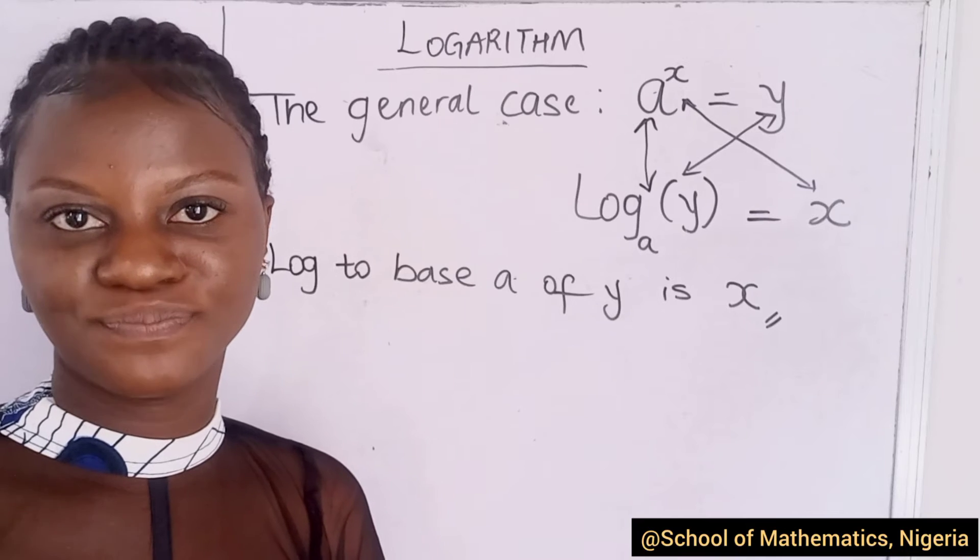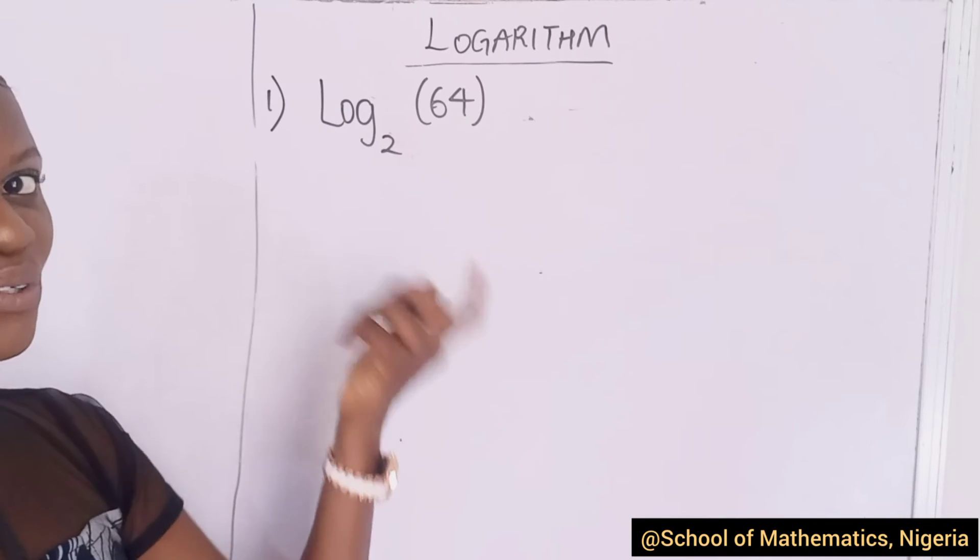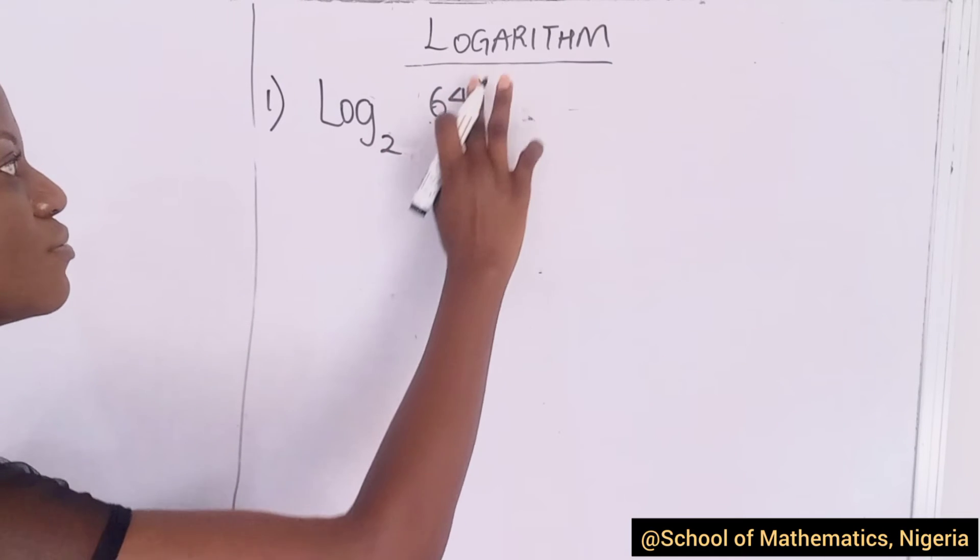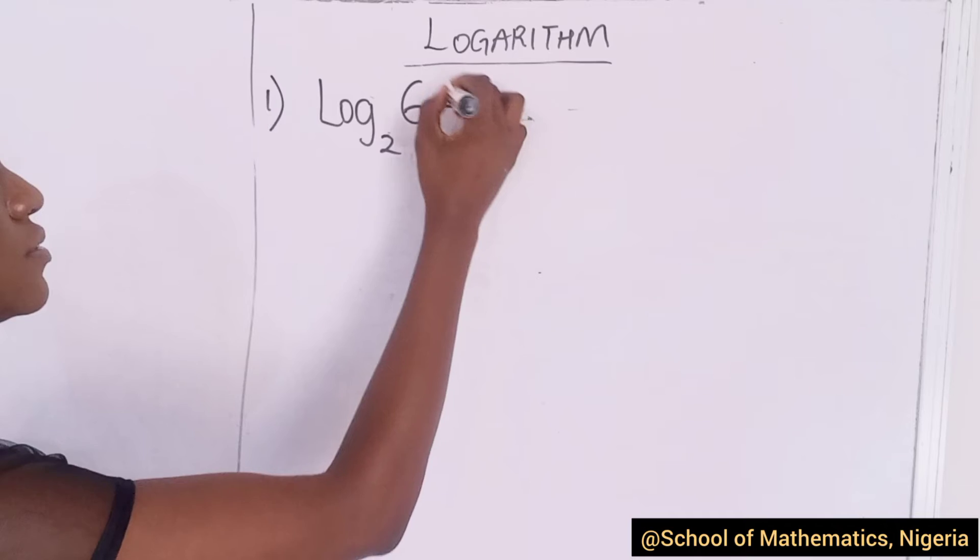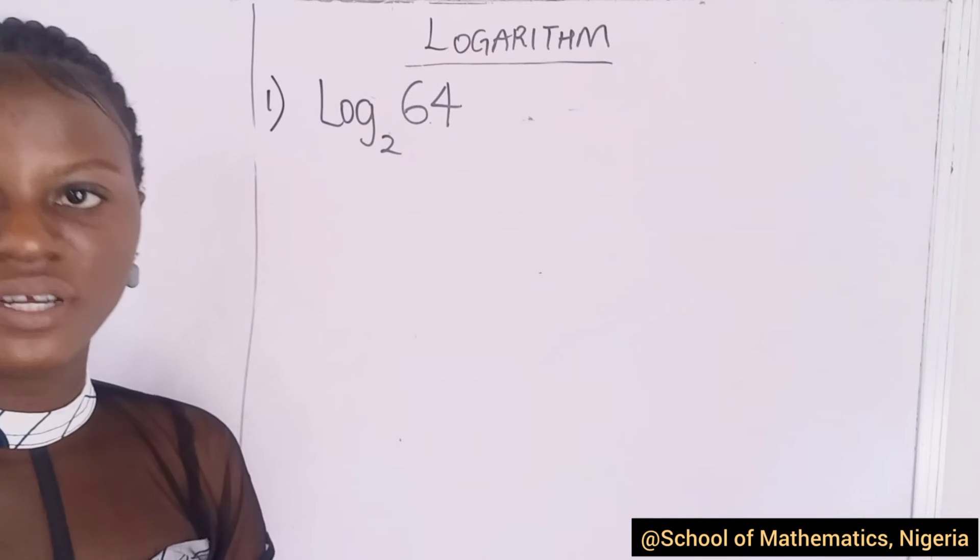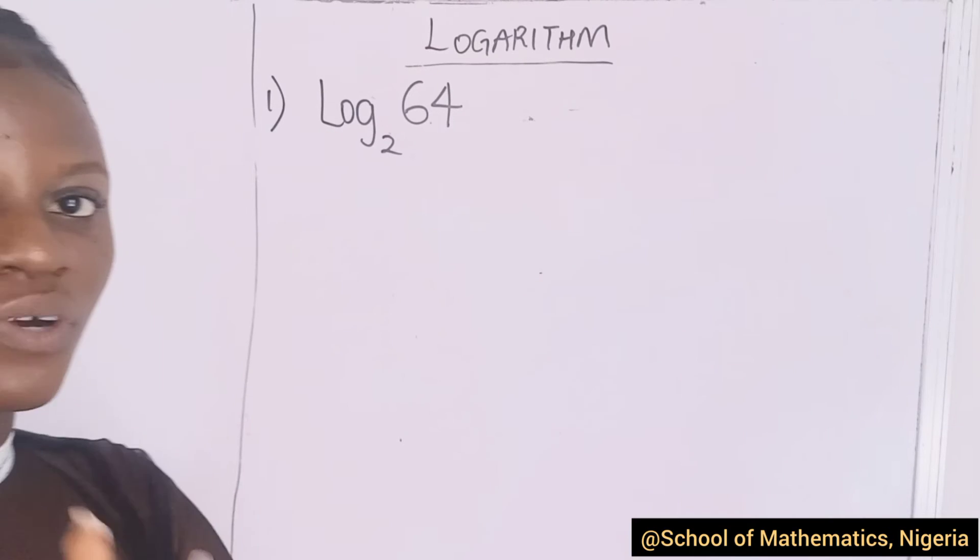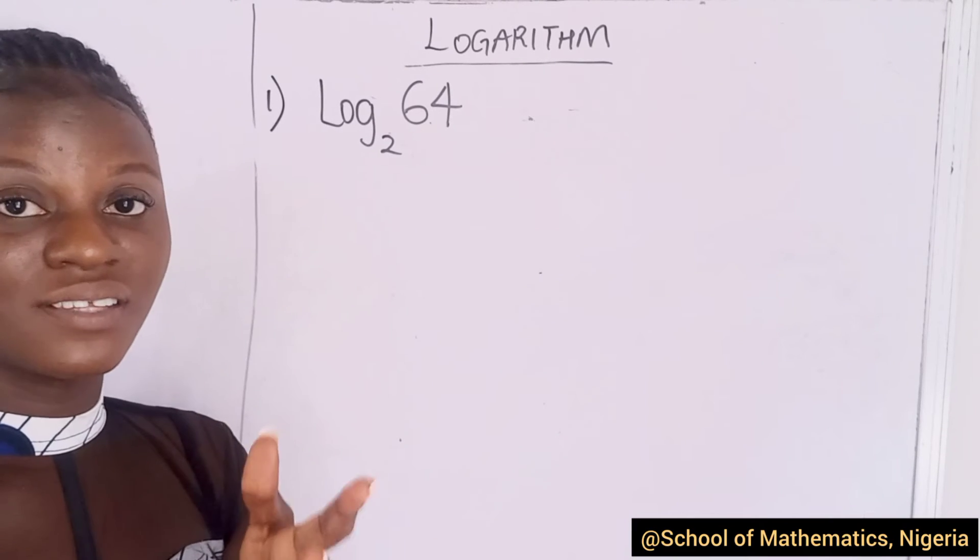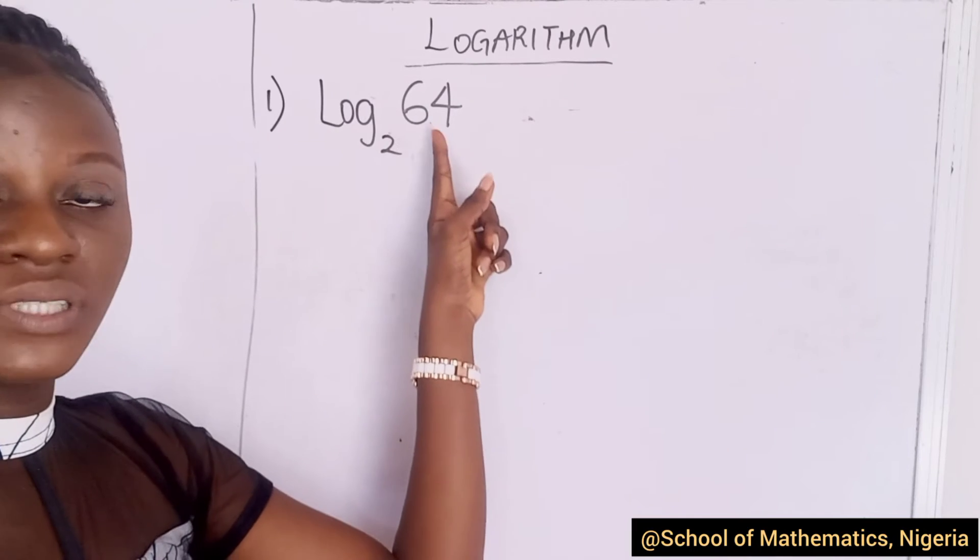Now, let's do an example so that you can get me. We could have a bracket or not, just to let you know that this is different from 2. So, I'll write it like this. Now, imagine you're given a question like this in logarithm. Find the log to base 2 of 64. What did we say?